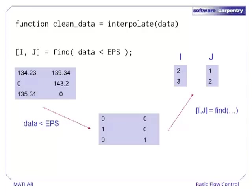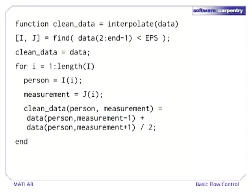Find returns the indices of elements in our data matrix that are zero. Our new program is even more compact than the last, and we've only looped over those values that definitely need to be replaced. One thing we have to be careful about is that we only pass find the center of our matrix. The first and last measurements must get special treatment, and again, we leave this as an exercise to the reader.